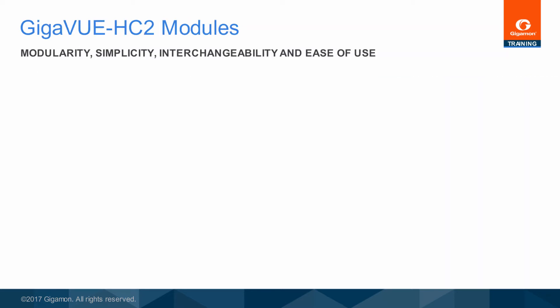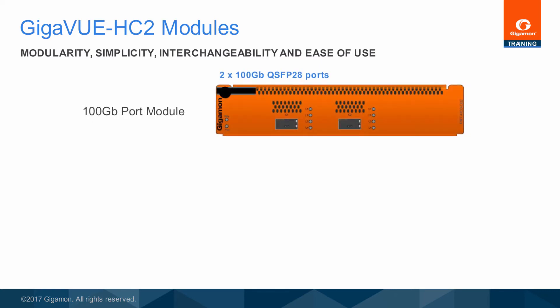The easily reconfigurable Gigaview HC2 supports hot-swappable port modules for 1 gigabit, 10 gigabit, 40 gigabit, and 100 gigabit links, accepting all standard Gigamon SFP, SFP+, QSFP+, and QSFP28 transceivers, including direct-attach copper, active fiber cables, SR, LR, ER, and BiDi. The 100 gigabit module accepts two QSFP28 transceiver modules supporting SR4 links.